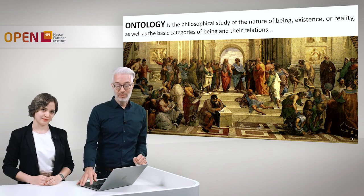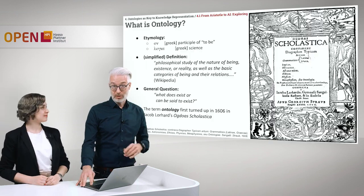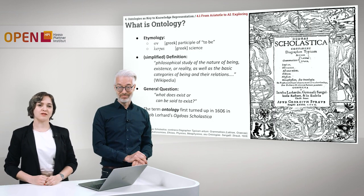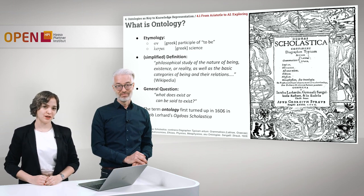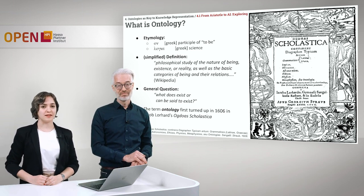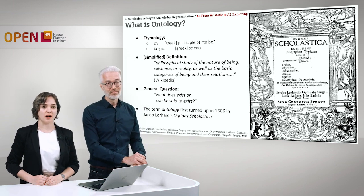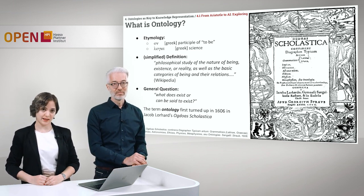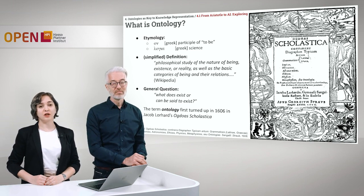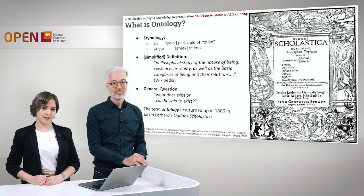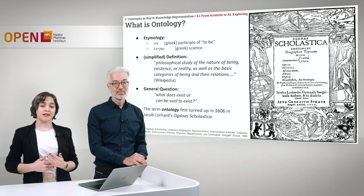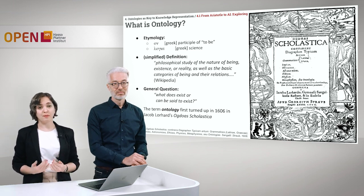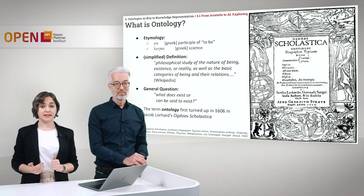The word ontology has its roots in the Greek language. Etymologically, this word consists of two parts. The first part, "on", in Greek, is the participle of the verb "to be". And the second part, "logia", means science. So to give the etymological definition of ontology, that would be the science of being, or the science of existence.